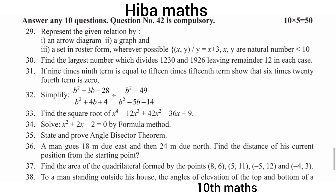First question: represent the given relationship by arrow diagram, graph, and set in roster form. y is equal to x plus 3, where x and y are natural numbers.